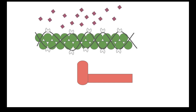Troponin actually needs this molecule — calcium — to bond with it. Calcium is the perfect little shape; it's floating around all over your body. You get it from your food. There are lots of different sources of calcium in your diet, and calcium can fit with the troponin.